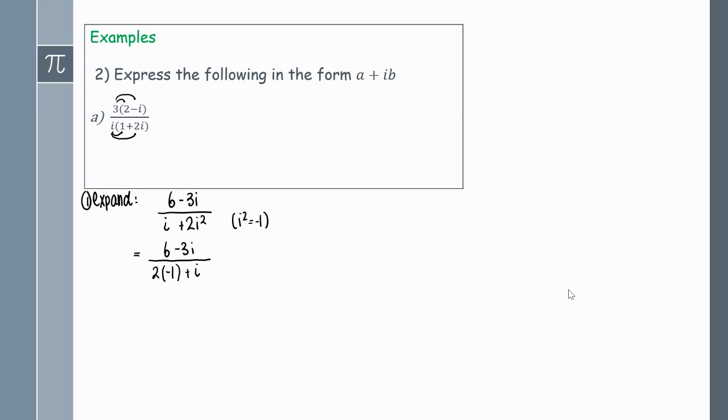Recall that i squared is minus 1, so on the denominator I'll get 2 times minus 1 plus i. Now we've got to make it in the form of a + bi by rationalizing. Multiply the bottom and the top by the conjugate.